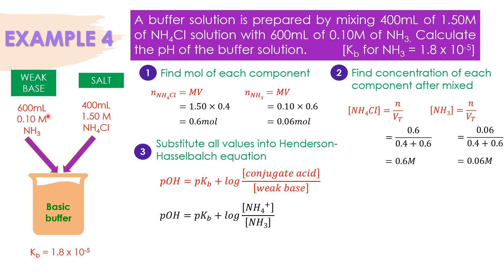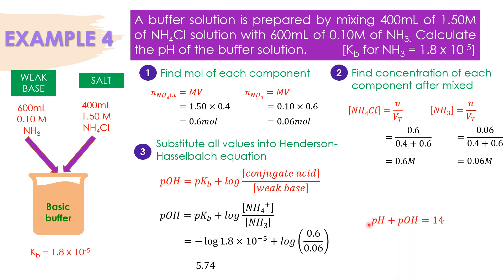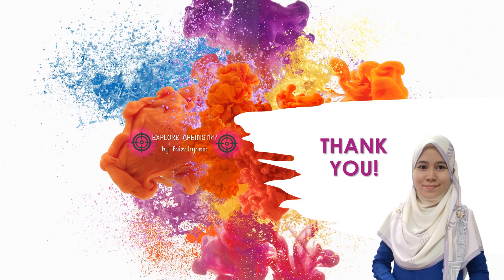Same goes to NH3 — jangan ambil concentration yang 0.10, ambillah concentration 0.06, iaitu concentration after mix. Substitute all the values — so kita dapati pOH adalah 5.74. Untuk mencari nilai pH, kita guna formula pH plus pOH is equal to 14. pOH kita adalah 5.74, substitute the value, so pH kita adalah 8.26. Thank you for watching.